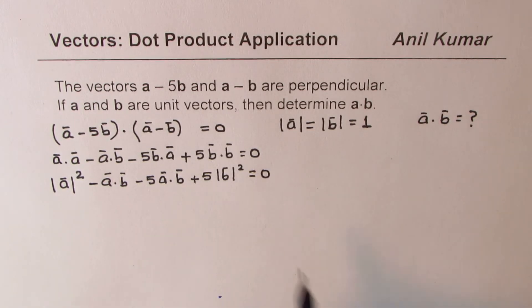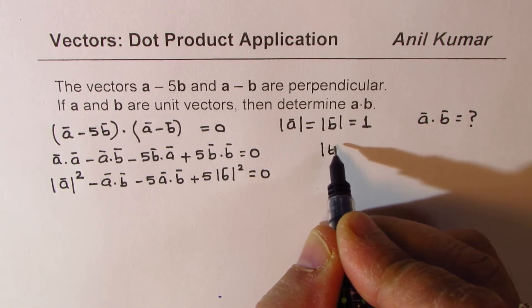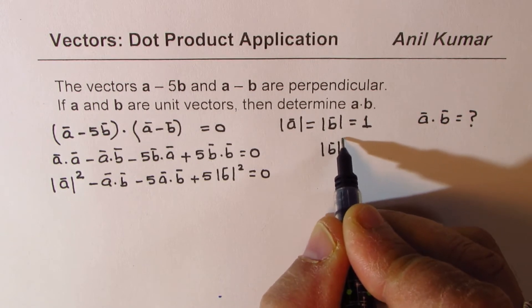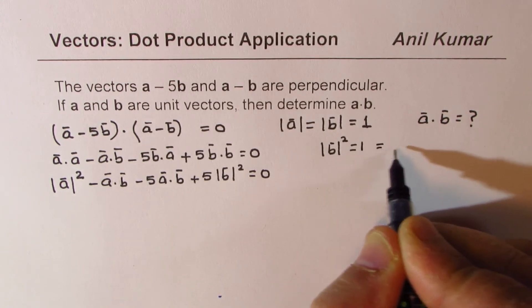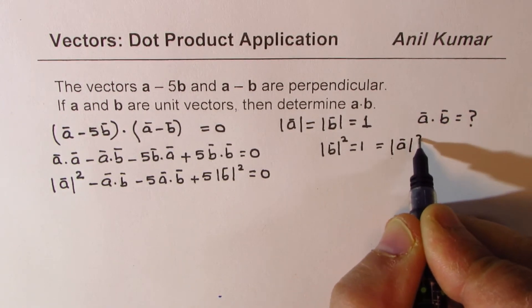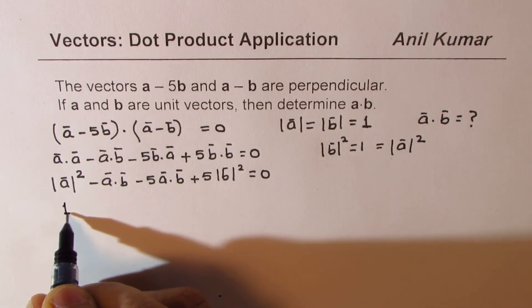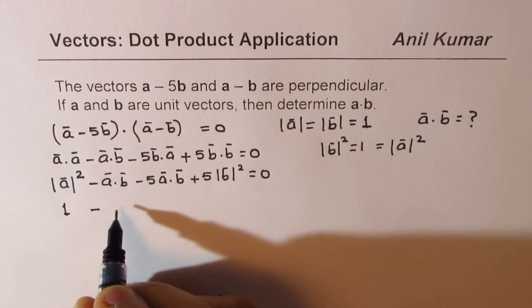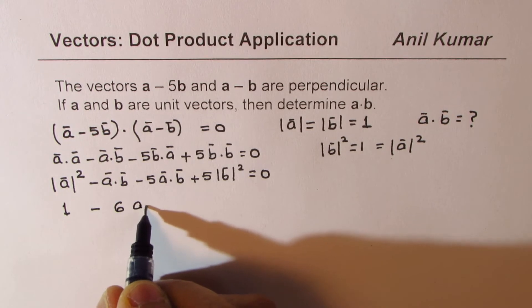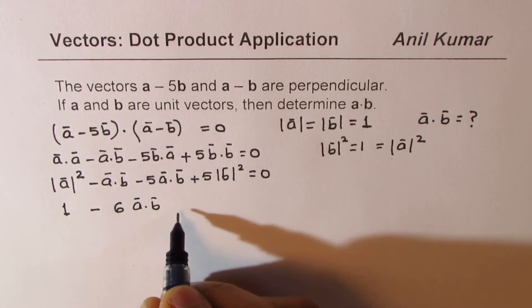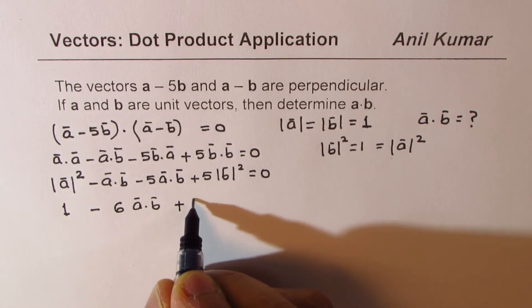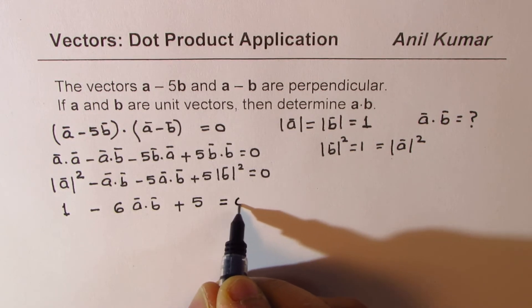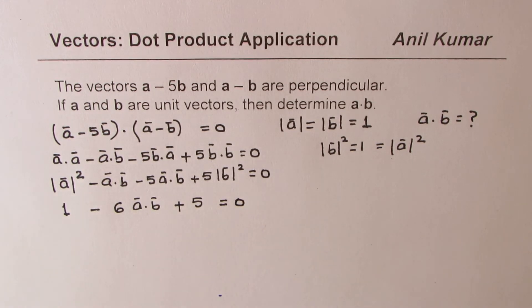Now, since we are also given they are unit vectors, so definitely magnitude of B squared is equal to 1, which is also equal to magnitude of A squared. So we'll put 1 for them. 1 minus, and that becomes 6 A dot B, that is your vector algebra part, plus 5 equals to 0.